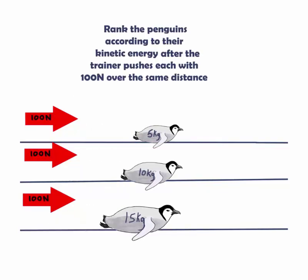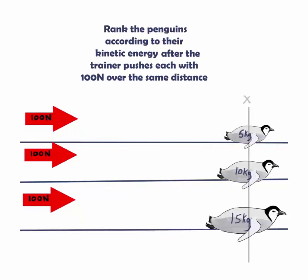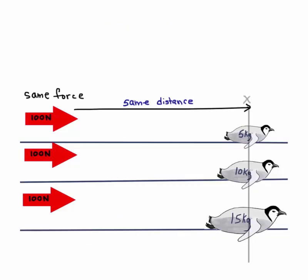Each penguin gets a push of 100 newtons. So the same amount of force is used. They also travel the same distance. If we use the work kinetic energy theorem, we can see this.